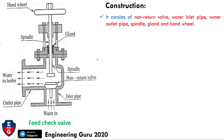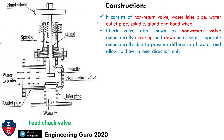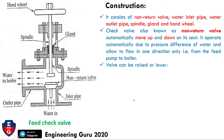The check valve, also known as a non-return valve, automatically moves up and down on its seat. It operates automatically due to pressure difference of water and allows flow in one direction only — that is, from the feed pump to the boiler. This valve is operated due to pressure difference; the valve can be raised or lowered on the gun metal seat with the help of the spindle and hand wheel.